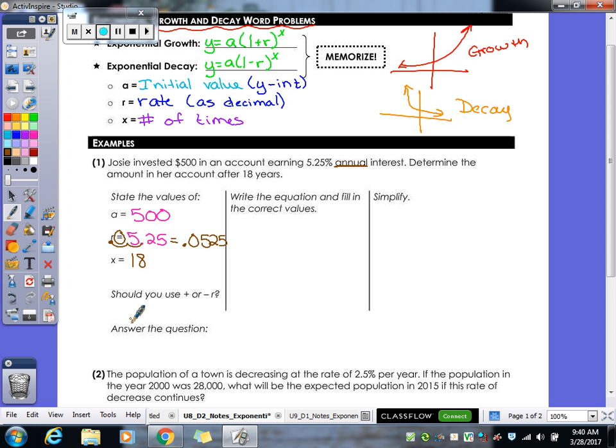So now would this be a growth or a decay? A growth. Yeah, so we're going to use a plus sign for this. This one's going to be a growth problem. So let's write over here our formula first. Again, the more times you write it, the more it's going to help you remember it. So Y equals A times 1 plus R to the X power. Let's fill in what we know. So our A is 500, 1 is a 1, our R is .0525, and our X was an 18.